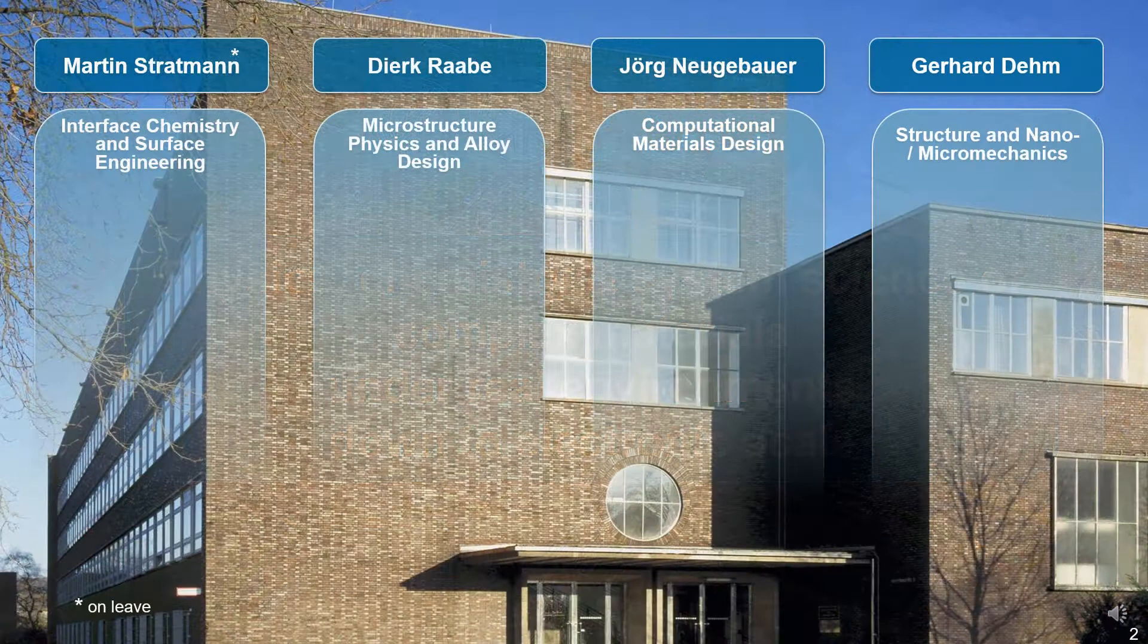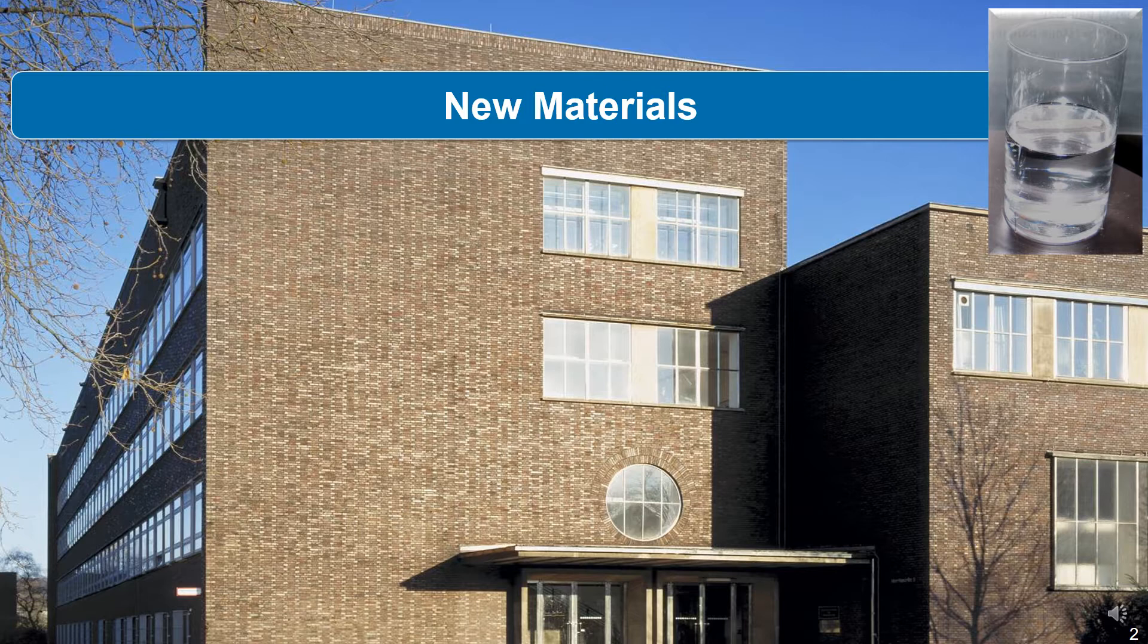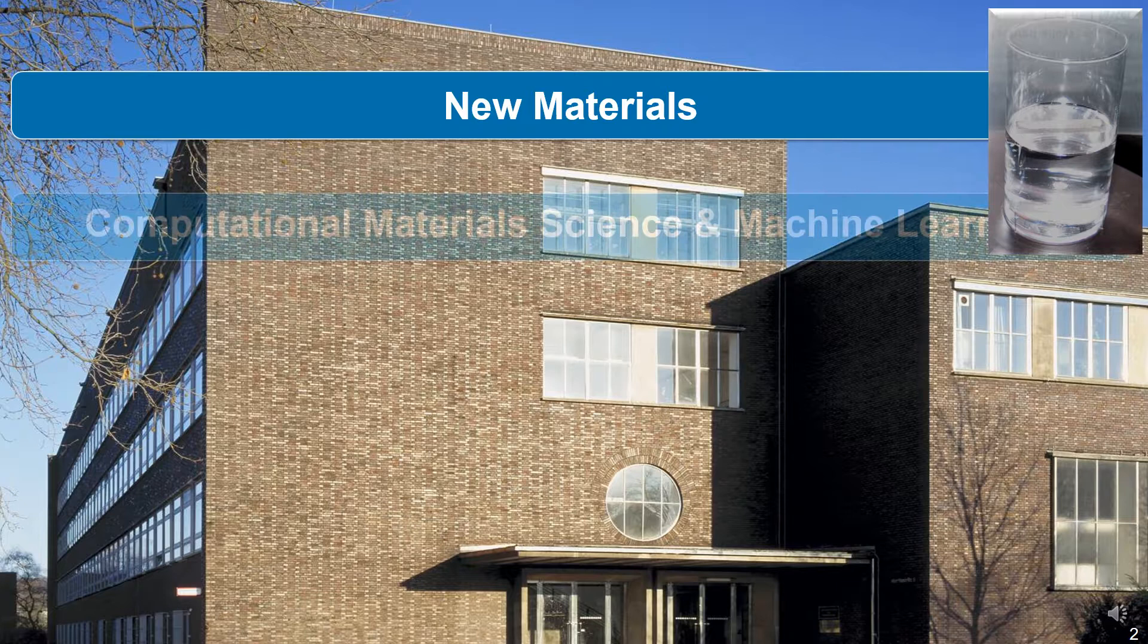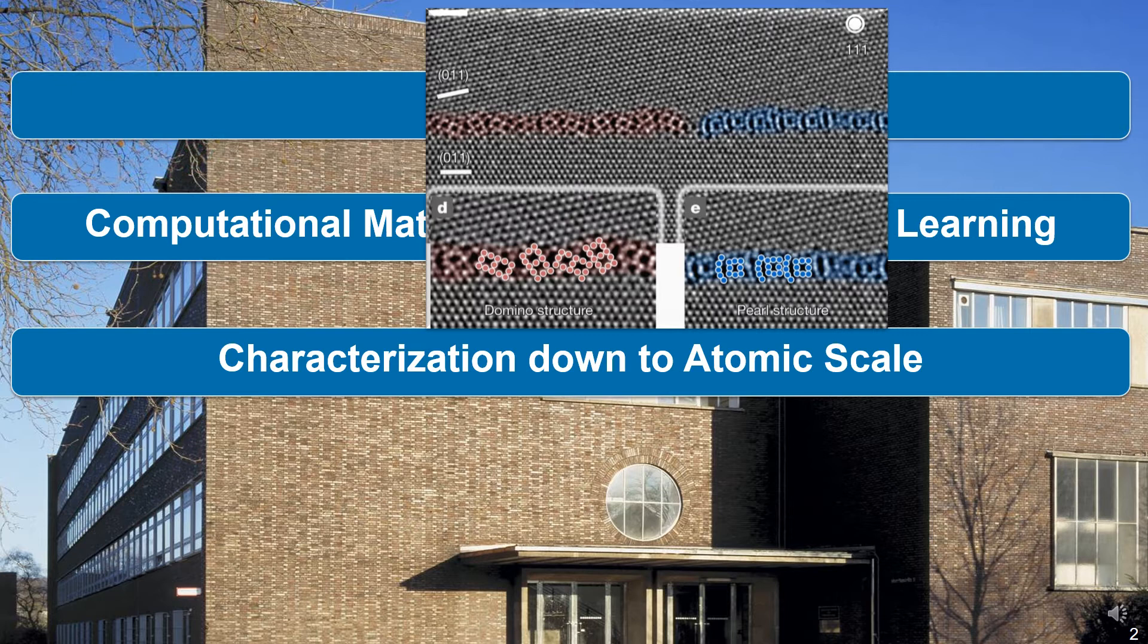We do a couple of topics together across departmental borders. An example is that we try to invent new materials, like magnesium lithium ultra lightweight alloys. We do computational material science and machine learning across departmental borders. Here you see an example where we designed titanium based implant materials based on first principles. The institute has a high strength on characterization of materials down to the atomic scale. Here you see an example on phase transformations studied at the atomic scale at grain boundaries.